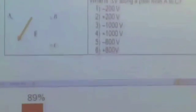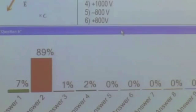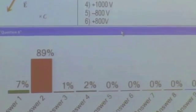Okay, so most of us are getting positive 200 volts, and so we can go through and do the dot product, and we'll just sketch it out real quick.